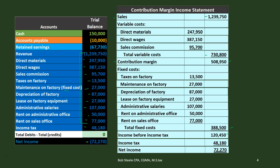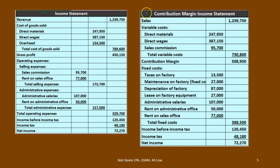Comparing the two statements: both arrive at $72,270 at the bottom. What's different is the breakout. On the financial statement, we're concerned about categories — gross profit showing the relationship between revenue and cost of revenues, then selling and administrative expenses. On the contribution margin statement, we group by behavior — variable costs and fixed costs — with items from production, selling, and administrative areas mixed together. This format is for internal purposes, not external financial reporting.